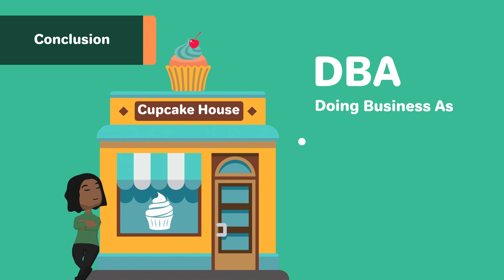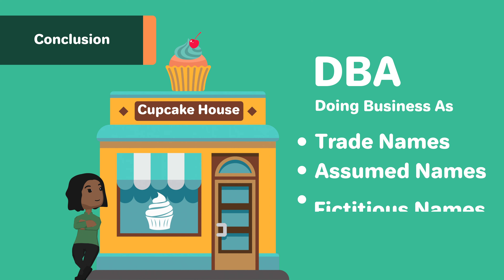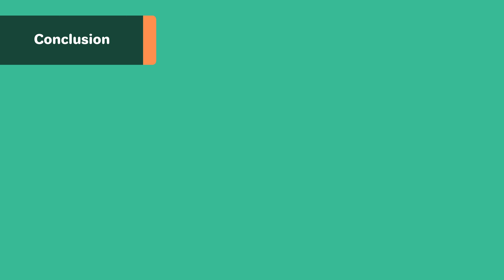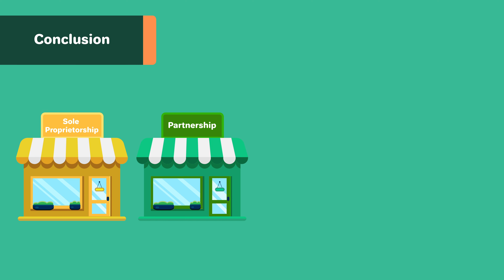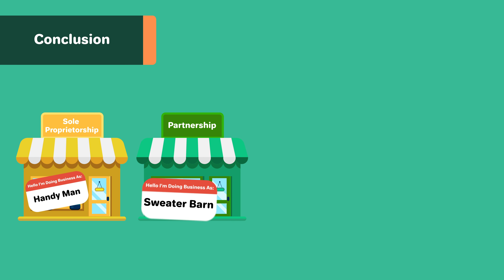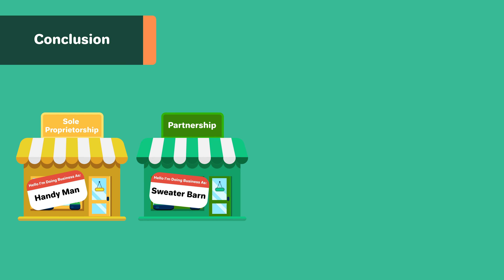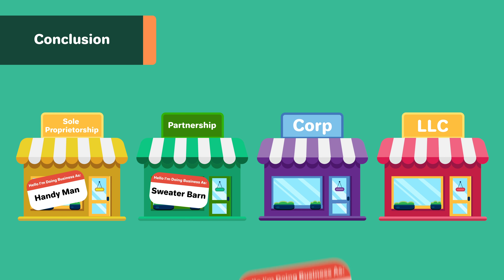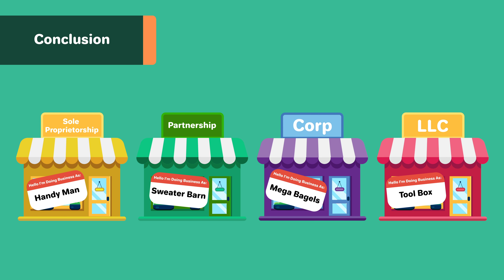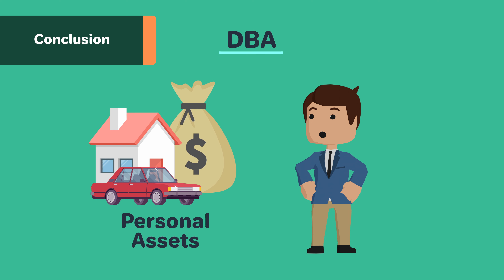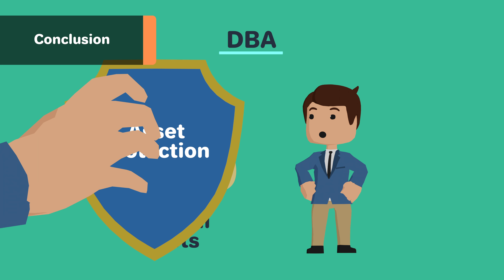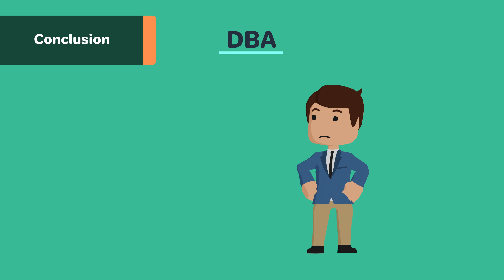DBAs, or doing business as, are also known as trade names, assumed names, or fictitious names of a business. Informal business structures like sole proprietorships and partnerships can use DBAs as their business name instead of their surnames. Formal business structures like LLCs and corporations can use DBAs as a means to rebrand their name, add new brands, or change the name they are using as their business name. DBAs are not a business structure and are not separate legal entities. They also do not provide asset protection or liability protection to informal business structures.